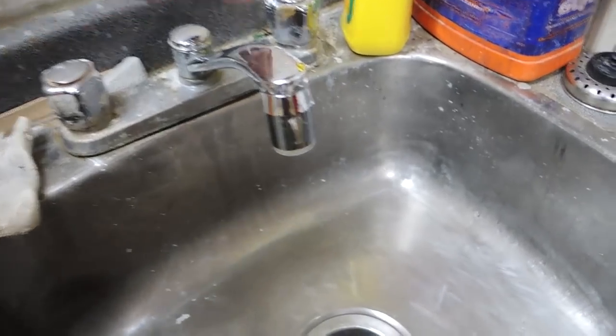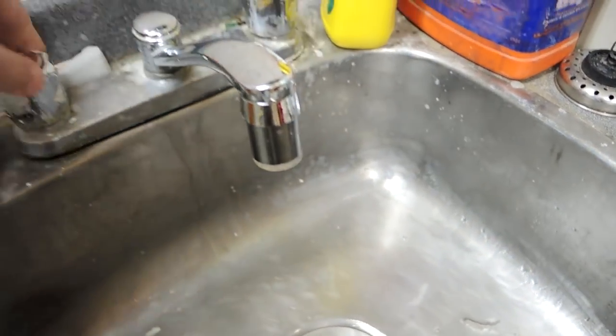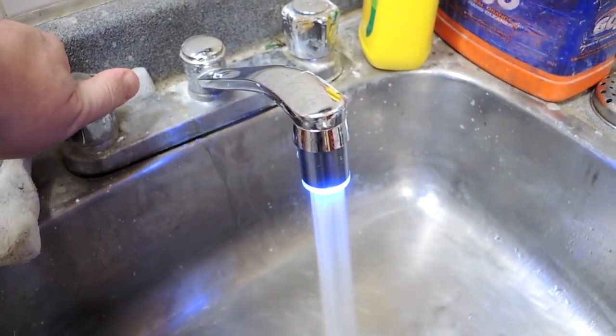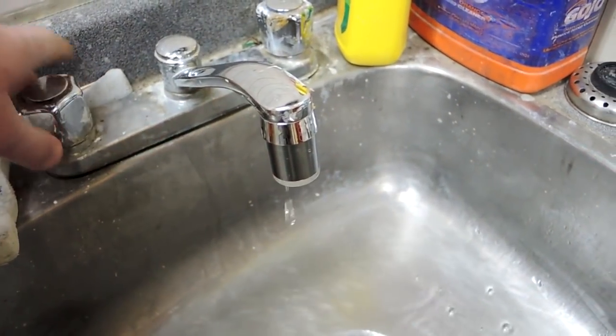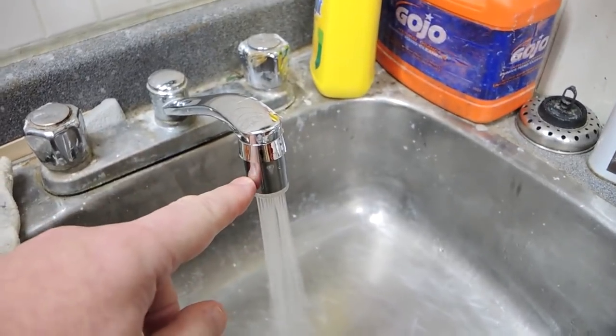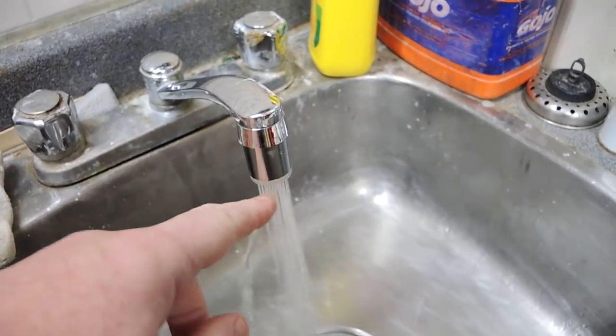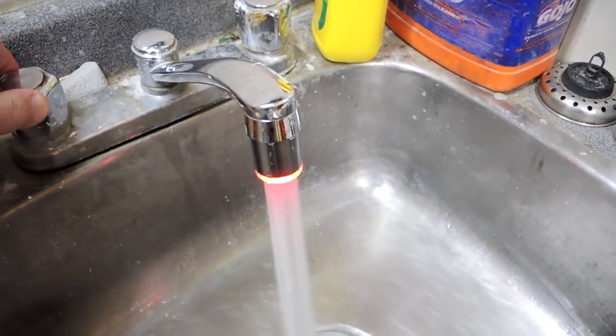So it sort of works. If I turn the cold water on full it'll turn blue of course, and then if I turn on the hot water it'll eventually turn red, which is fine. The problem of course, if you turn it on at a fairly modest rate, you can see the generator doesn't create enough electricity to turn the bulb on. It's only until you get a fairly high velocity does it work.